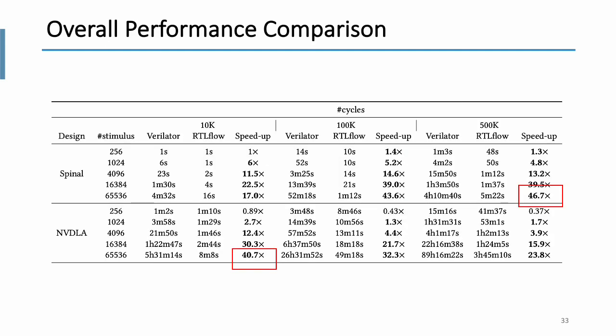The table here compares the simulation time between Verilator with 80 CPU threads and RTLflow with one A6000 GPU on Spinal and NVDLA for computing 256, 1024, 4k, 16k stimulus at 10k, 100k, and 500k clock cycles. With RTLflow, RTLflow is 46.7 times faster on Spinal at 500k cycles and is 40.7 times faster on NVDLA at 10k cycles. We can clearly see RTLflow's structural and stimulus-level parallelism bring significant performance benefits to simulate multi-stimulus in parallel.